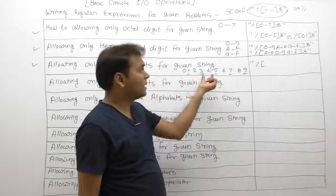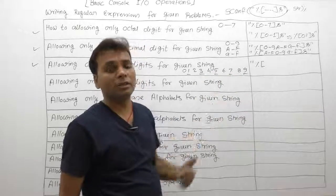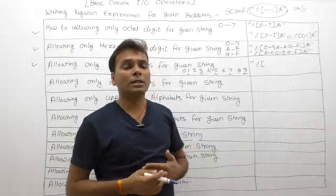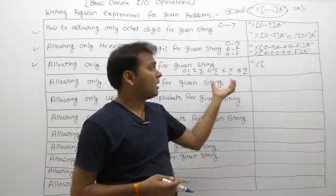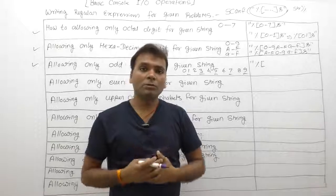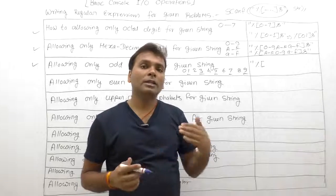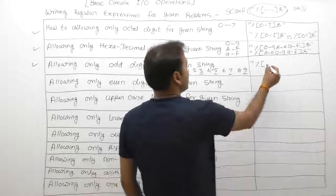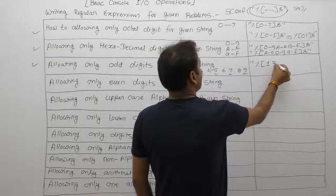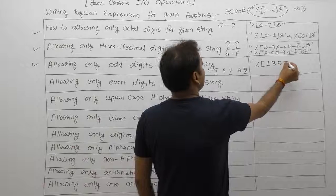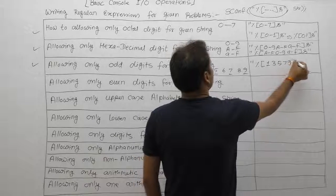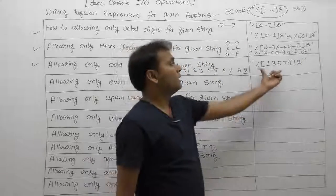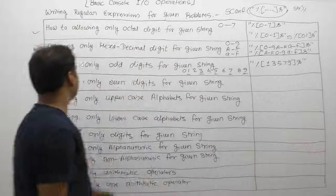Since odd digits are alternate numbers, not a continuous range, you cannot use a range notation. Instead, you must manually list each symbol. The list of symbols is: 1, 3, 5, 7, 9, closing square bracket, then 's'. This allows only the listed odd digits.